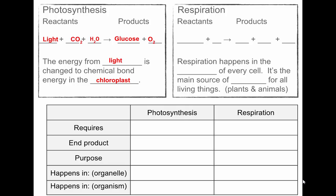For respiration, Grace gives the equation: glucose (C6H12O6) plus oxygen (O2) yields ATP, water (H2O), and carbon dioxide. The order of products doesn't matter as long as they're on the right side of the arrow. Respiration happens in the mitochondria of every cell. It is the main source of energy for all living organisms — plants, animals, bacteria — all of them use respiration to make ATP.